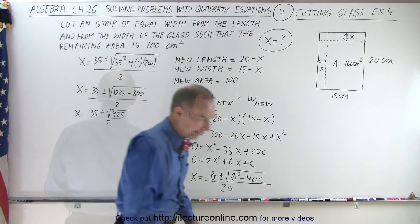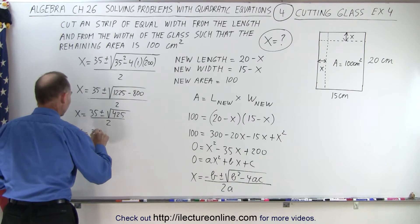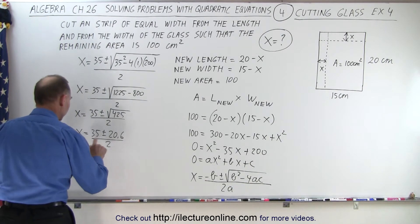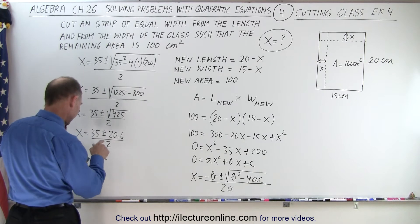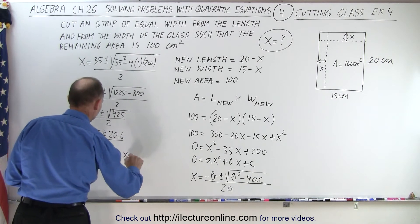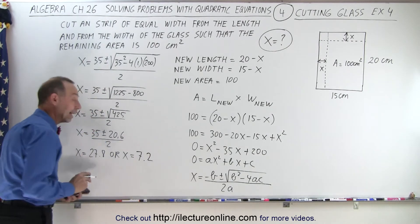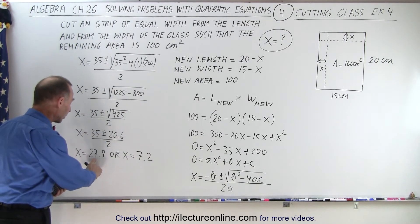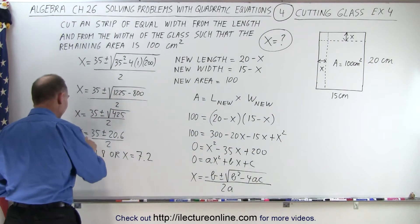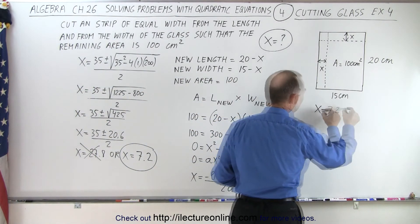So x equals 35 plus or minus the square root of 425, divided by 2. Taking the square root of 425 gives 20.6, so x equals 35 plus or minus 20.6, divided by 2. That gives two possible answers: x equals 55.6 divided by 2, which is 27.8, or x equals 35 minus 20.6 divided by 2, which is 7.2. Notice only one can be realistic — there's no way to cut 27.8 centimeters off the width or length and have anything left over. So x equals 7.2 centimeters is the only realistic answer.